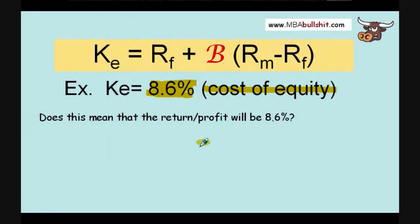Now, the question here—I just want to pose you a question. Does this mean that if you invest in that investment and the higher risk investment, does this mean that your profit will be 8.6%? Does it mean that? Let's say you come out with a figure, K sub E equals 8.6%. What does that mean? Does it mean that you'll earn 8.6%? The answer is no.